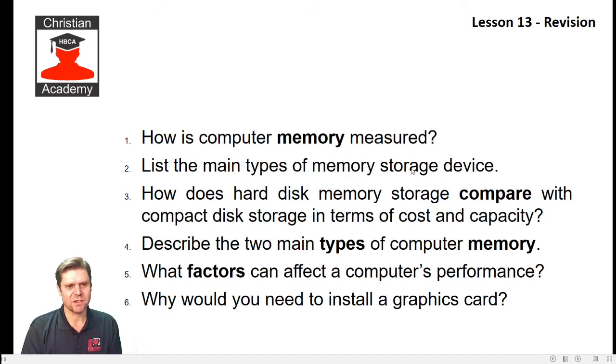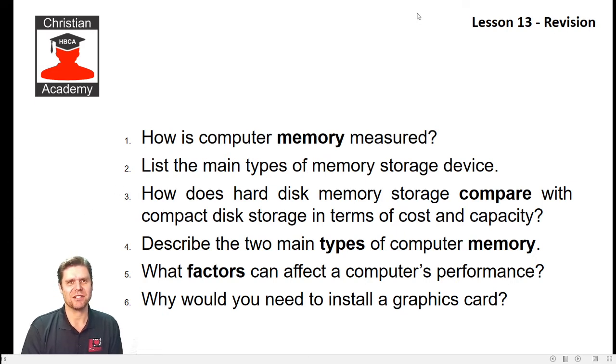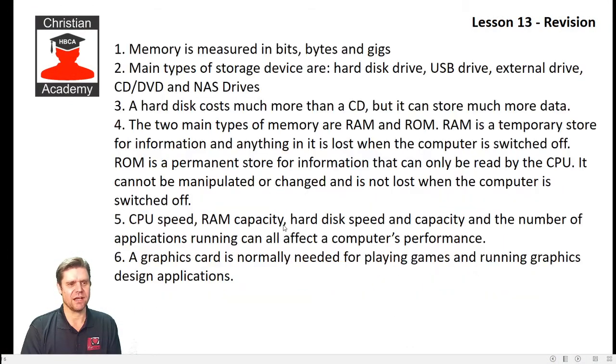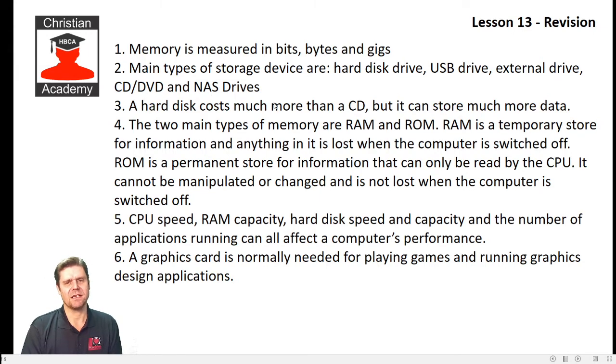List the main types of memory storage devices. Think about a few before the answer is given. The main types of storage devices are: hard disk drives, USB flash drives, external hard drives that you plug in via USB, CD and DVD disk writers, and NAS drives. A NAS drive is a Network Access Storage device — a device you plug in on your local network to store data on.